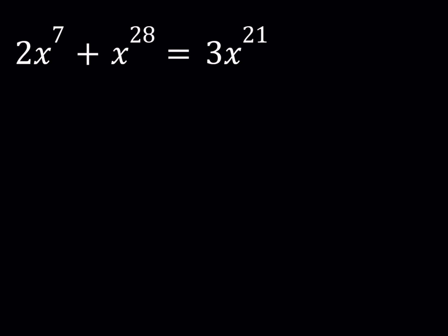Hello everyone. In this video we're going to be solving an unvigintic polynomial equation. I know that term is not very common, but it just means 21st power. So we have this equation: 2x to the 7th power plus x to the 28th power is equal to 3 times x to the power 21.